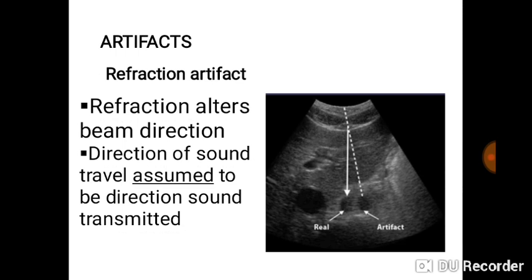You have the refraction artifact, which alters the direction of the beam. The direction of sound travel is assumed to follow the direction of transmission, but due to differences in beam angle, when the beam reaches a structure it can appear to duplicate it — making it look like there are two or double structures. It is actually the principle of refraction creating the other image. When you manipulate your probe and adjust the angle a bit, you see it is just one structure.